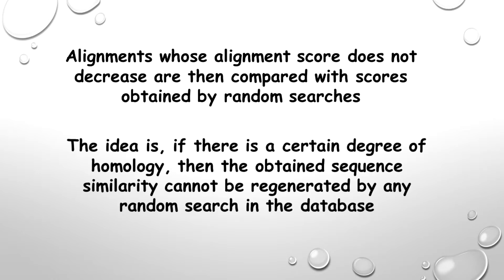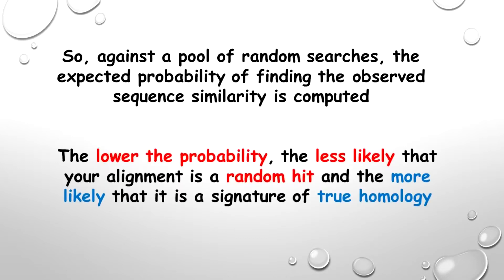Alignments whose alignment score does not decrease are then compared with the scores obtained by random searches. The idea is that if there is a certain degree of homology, then the obtained sequence similarity cannot be regenerated by any random search in the database. So against a pool of random searches, the expected probability of finding the observed sequence similarity is computed. The lower the probability, the less likely that your alignment is a random hit and the more likely that it is a signature of true homology.